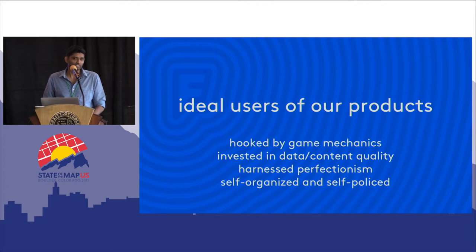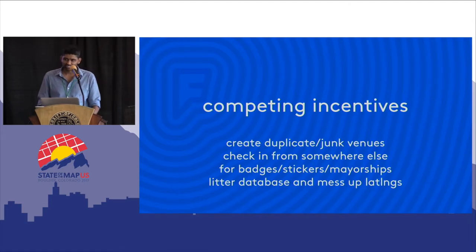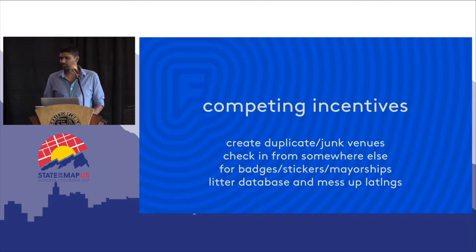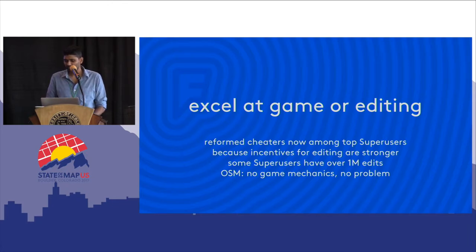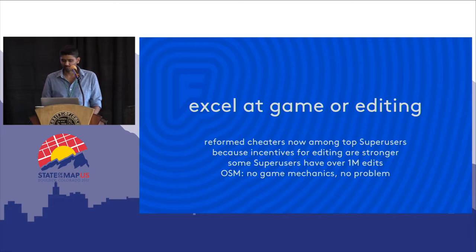But game mechanics as a motivator has its problems. Users were essentially being incentivized to create duplicate or junk venues in order to earn badges — what we now call stickers — or to become mayor of a place. It's the same reason they would check into a place they weren't physically present at, which would mess up our lat/longs. So there was this tension in the early days between excelling at the game and excelling at editing and maintaining data quality. In fact, some of our top super users today are reformed cheaters, which is what we called such users back then — possibly because of the stronger incentives we've built around editing. We have a handful of super users that have made more than a million lifetime edits, individually, which tells you that people believe the reward for putting in that kind of time and effort is compelling.